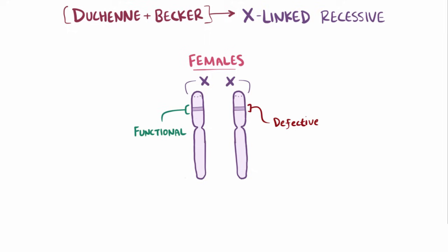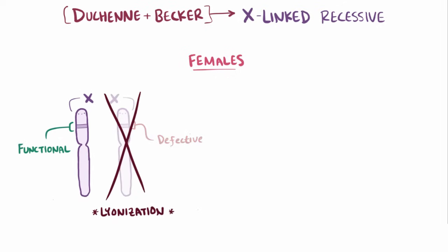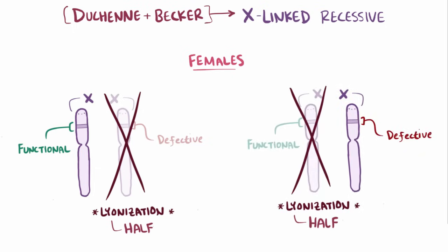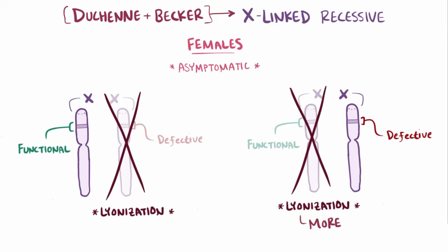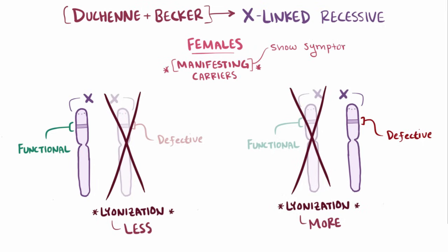In females, only one X chromosome gets expressed and the other is inactivated — called X-inactivation, or lionization. If this inactivation is random, you'd expect about half of the female cells to have a functional dystrophin gene and the other half to have a defective one, and these people are typically asymptomatic. However, if more cells end up with the defective dystrophin gene and fewer with the functional one, they can end up being manifesting carriers, meaning they manifest or show some symptoms.